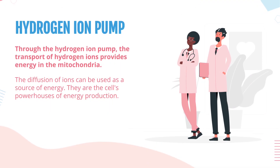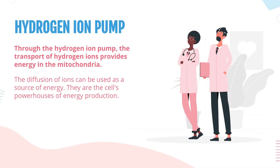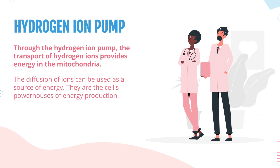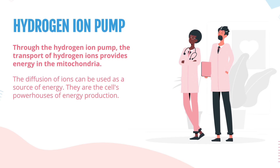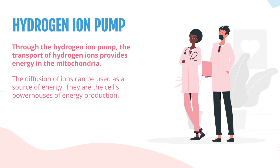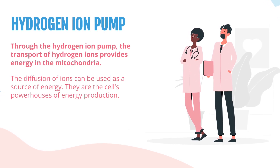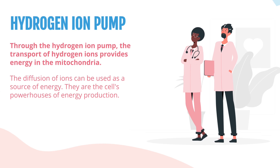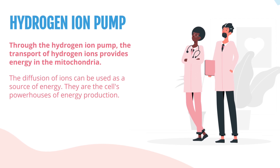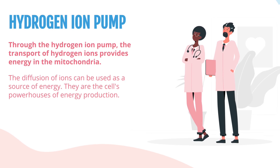Hydrogen Ion Pump: through the hydrogen ion pump, the transport of hydrogen ions provides energy into the mitochondria. The diffusion of ions can be used as a source of energy. They are the cell's powerhouses of energy production.